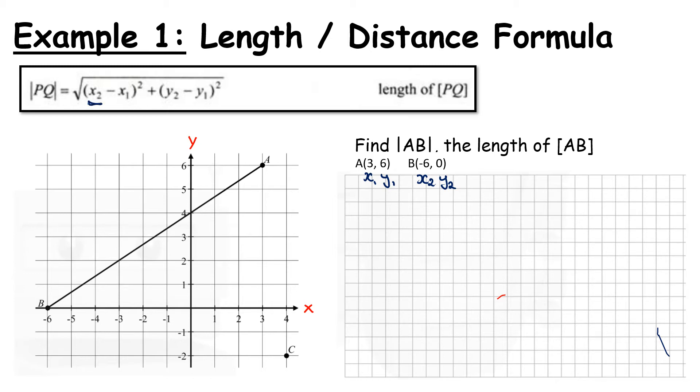So the next thing we would do if this was an exam, we would write down our formula and substituting that PQ for A, B. So we label our points and then we write our formula. X2 minus X1 squared plus Y2 minus Y1 squared, and that's all under a square root.